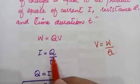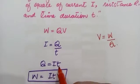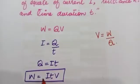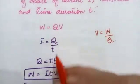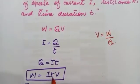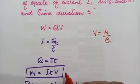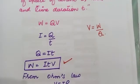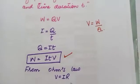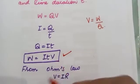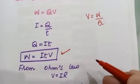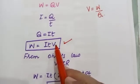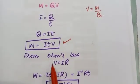Since electric current I = Q/t, by rearranging, Q = It. Substituting this value of Q into the equation W = VQ gives W = VIt. This is the relation for Joule's Law — the mathematical form of Joule's Law. We can also rearrange it using Ohm's law where V = IR.